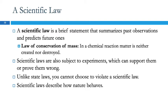Ultimately this leads to laws and theories. It's important to understand the difference. A scientific law is a brief statement that just says what happens — like the law of gravity. Laws help us predict what's going to happen. If I let go of this marker, the law of gravity says it's going to fall every single time. The law that came out of Lavoisier's experimentation was the law of conservation of mass, which says that in a chemical reaction, matter is neither created nor destroyed.